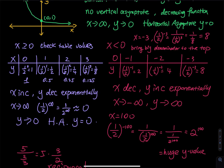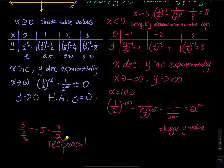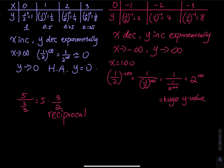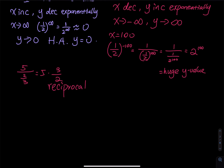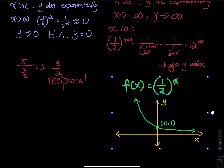A quick reciprocal reminder: for example, 5 divided by (2/3) equals 5 multiplied by the reciprocal of 2/3, which is 3/2. So the reciprocal of 2/3 is 3/2.